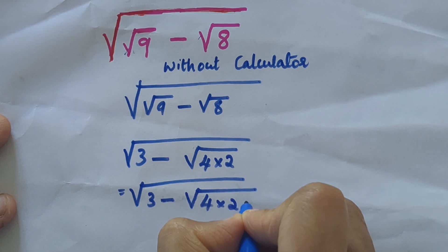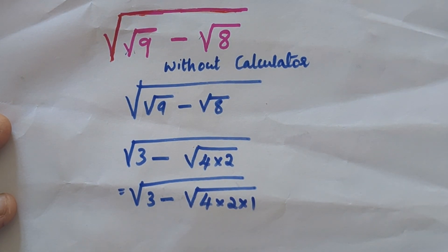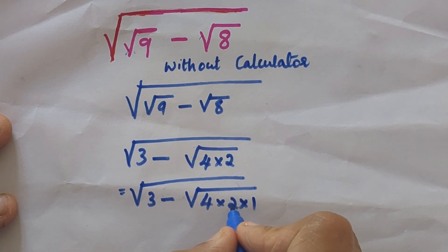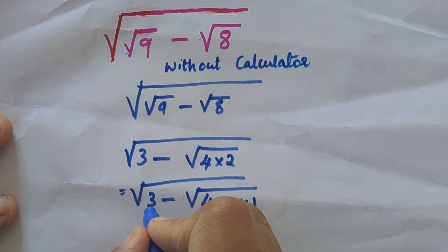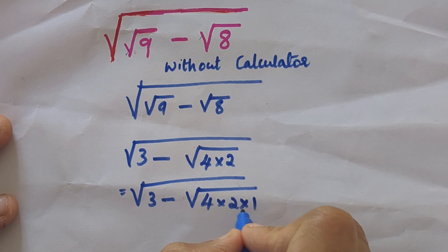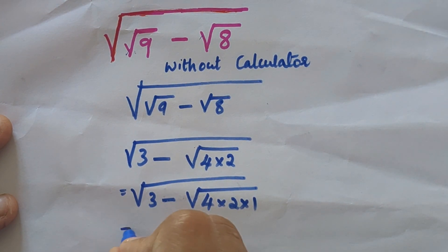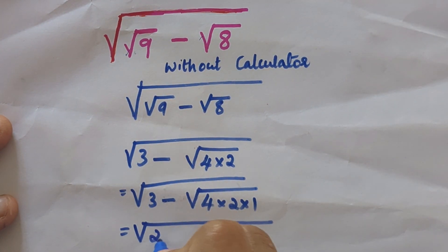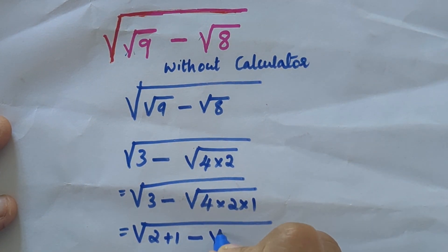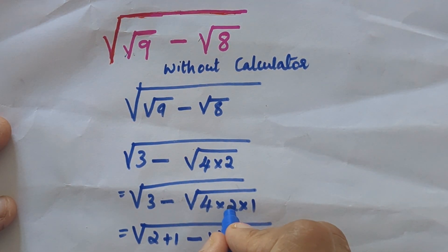So we can write 3 minus root of 4 into 2 into 1. The factors of 2 are 2 and 1, so split 3 in such a manner that we get 2 and 1, that is 2 plus 1 equals 3.